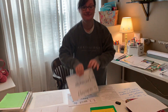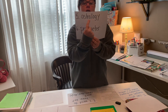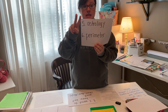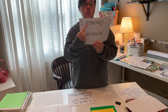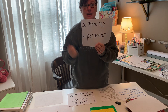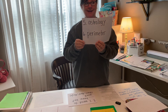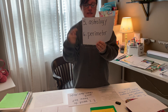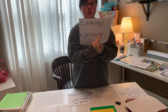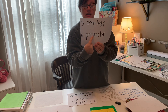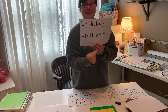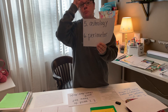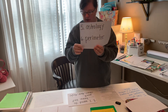Number five: 'astrology' — it's got two Greek and Latin roots in it. What does the word 'astrology' mean? Put the definition next to number five. Number six: 'perimeter' — two Greek and Latin roots. What is the meaning of the word 'perimeter'? Write it on your paper.